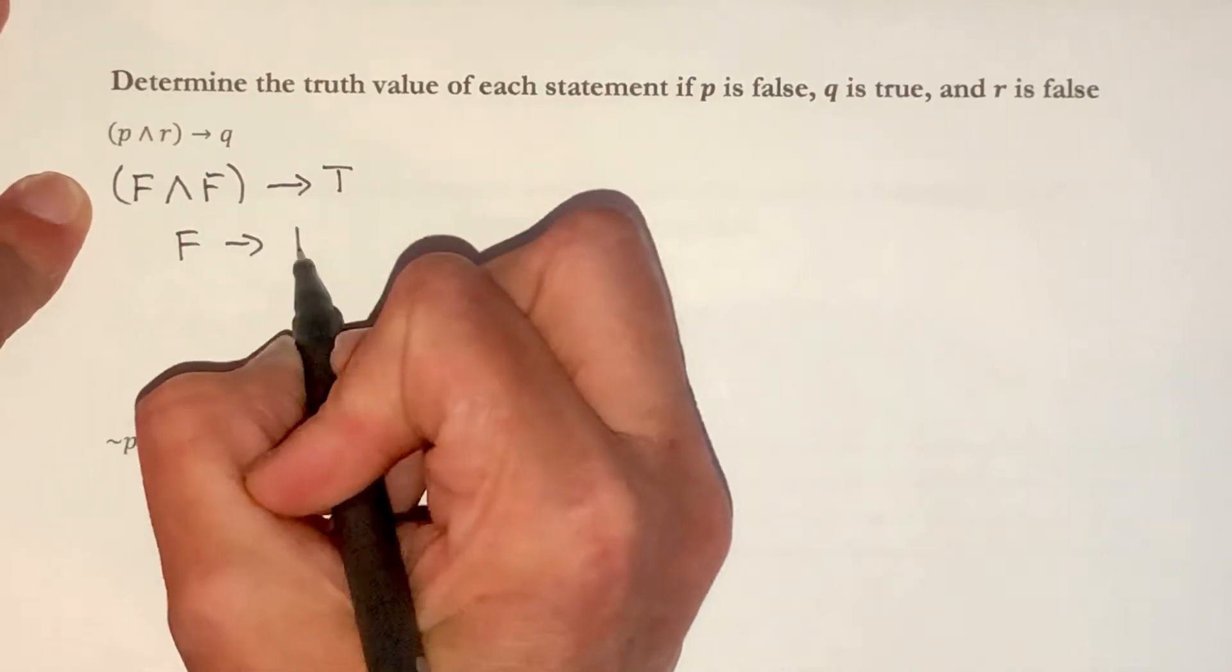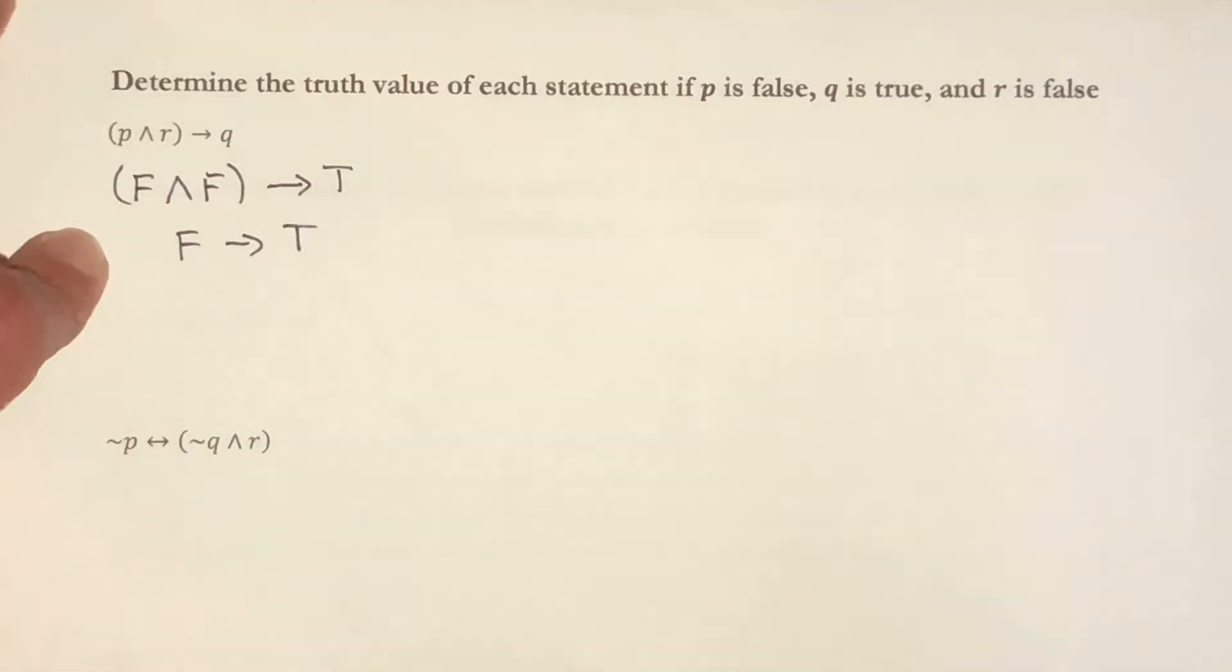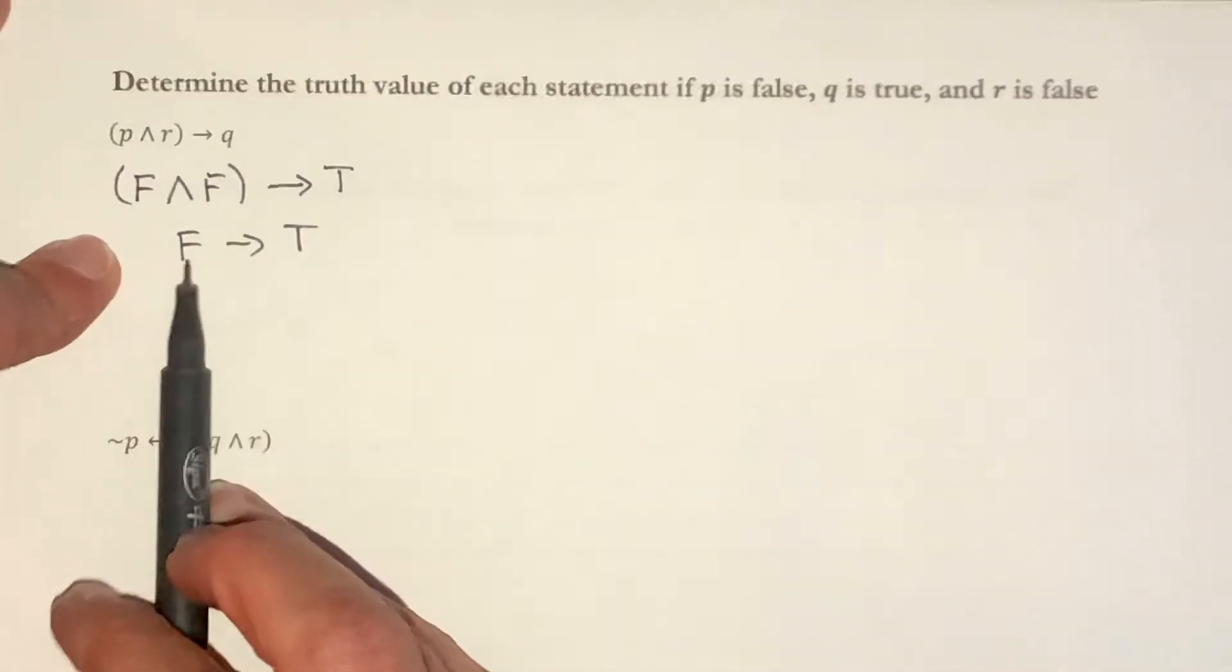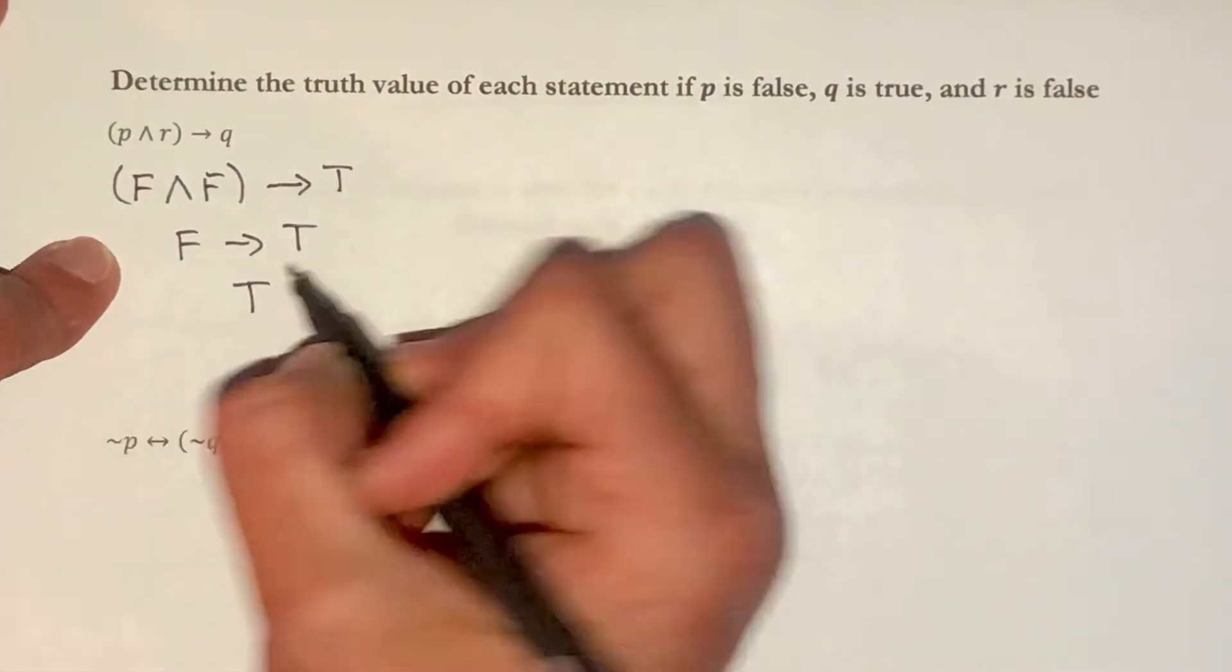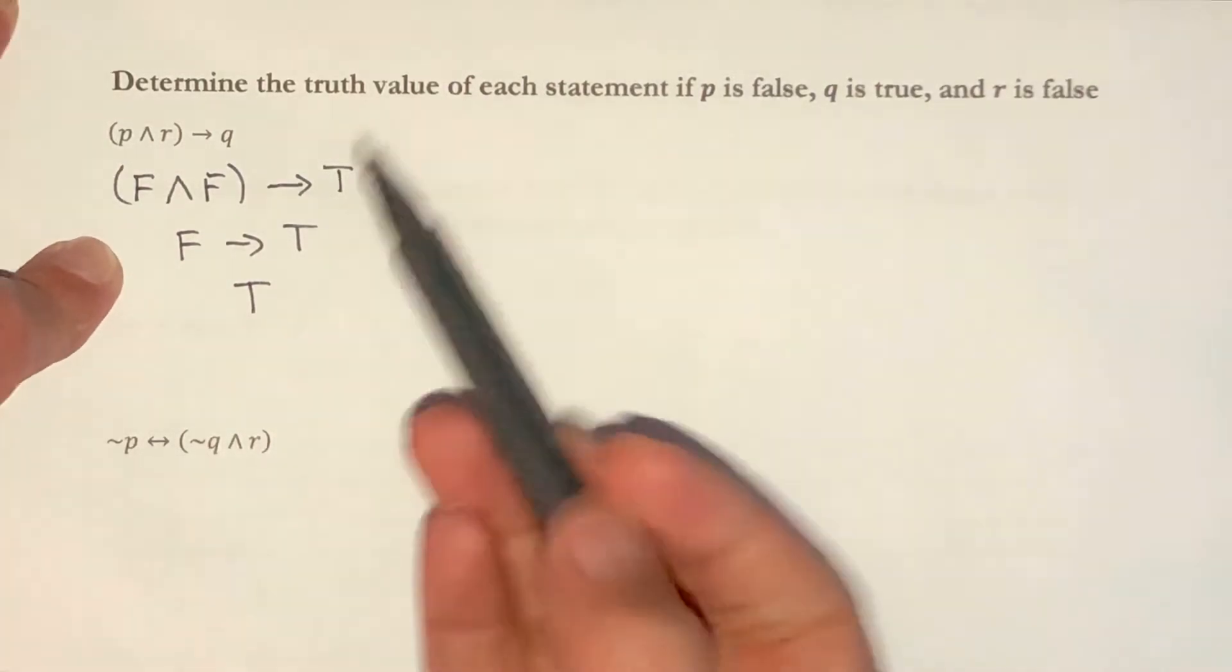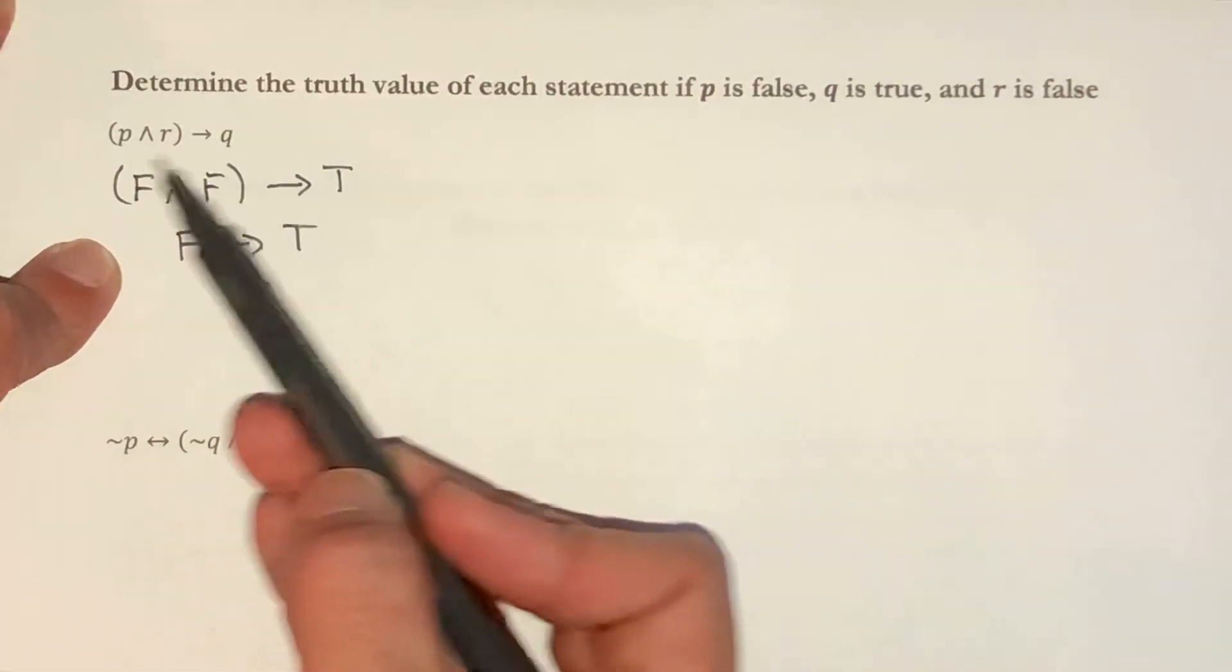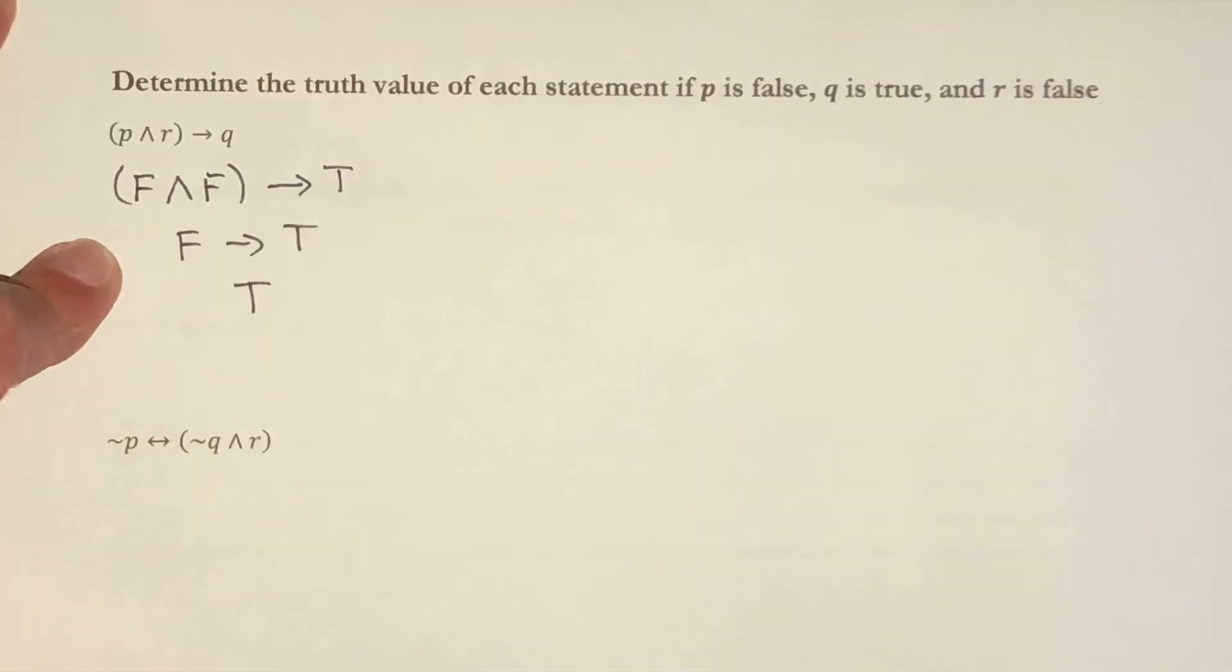So I have if false, then true. And remember, for a conditional, if your first statement is false, the overall statement is true. So with these truth values, this statement is true.